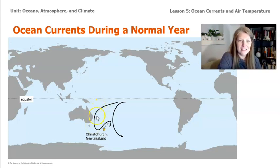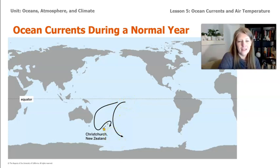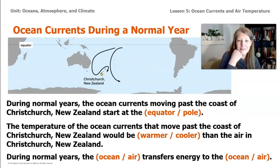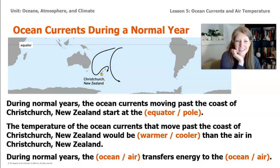This current originates at the equator — that's important. The second current also starts at the equator, where the water temperature is very warm, and travels down past the coast. So during normal years, the ocean currents moving past the coast of Christchurch, New Zealand start at the equator. If you said equator, give yourself a pat on the back.